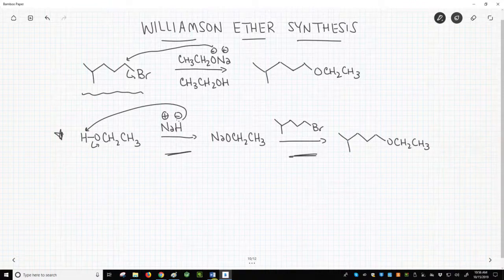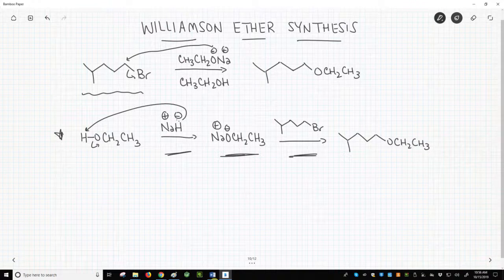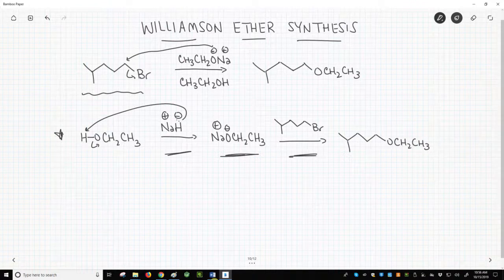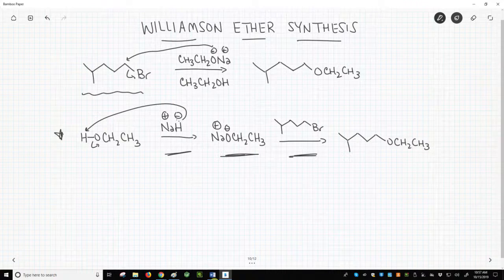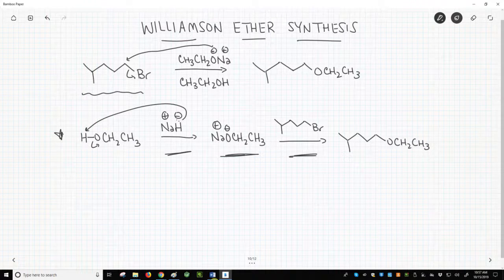Once the ethoxide nucleophile has been formed, we can then add in the second step the alkyl halide. In this second step, the SN2 reaction occurs, and we get our product. In both presentations, we get the same product. The second is more explicit about forming the alkoxide.